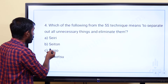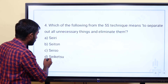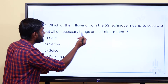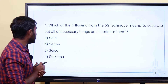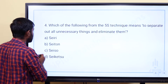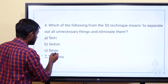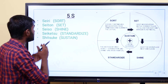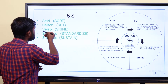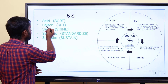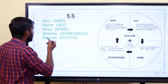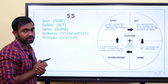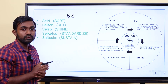The options are: option A — Seiri; option B — Seiton; option C — Seiso; option D — Seiketsu. The five Japanese words all start with S. Seiri means Sorting. Seiton means Set in order. Seiso means Shine. Seiketsu means Standardize. Shitsuke means Sustain.